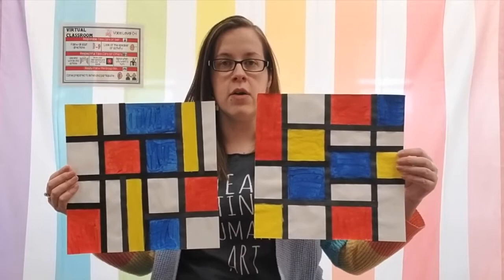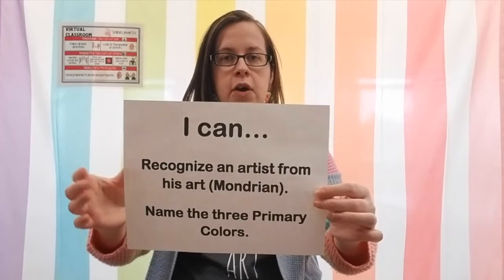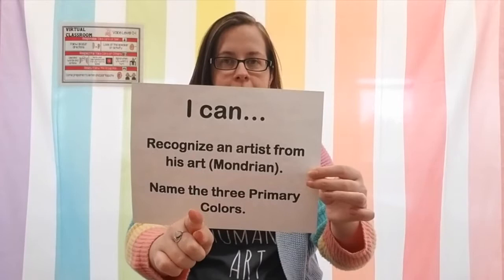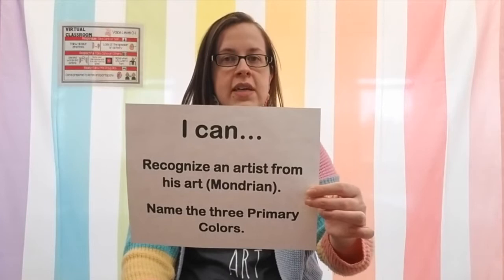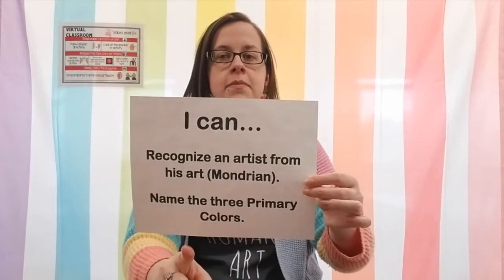But first we need to read our learning targets. I have two that we need to talk about today. I'll bring them closer so you can see them better. Remember I go first. I can recognize an artist from his art. So remember we're going to be learning about Mr. Piet Mondrian and looking at his artwork. And then there's a second target. I can name the three primary colors.